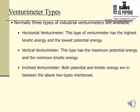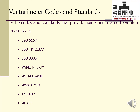Three types of industrial venturimeters are available: horizontal, vertical, and inclined. The horizontal venturimeter has the highest kinetic energy and lowest potential energy. The vertical venturimeter has maximum potential energy and minimum kinetic energy. The inclined venturimeter has both potential and kinetic energy between the other two types.